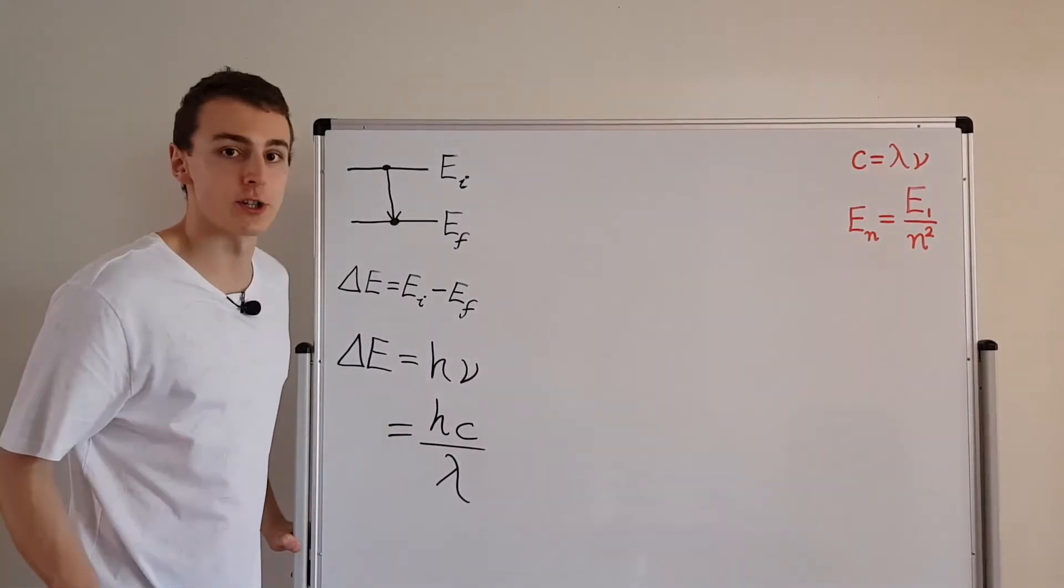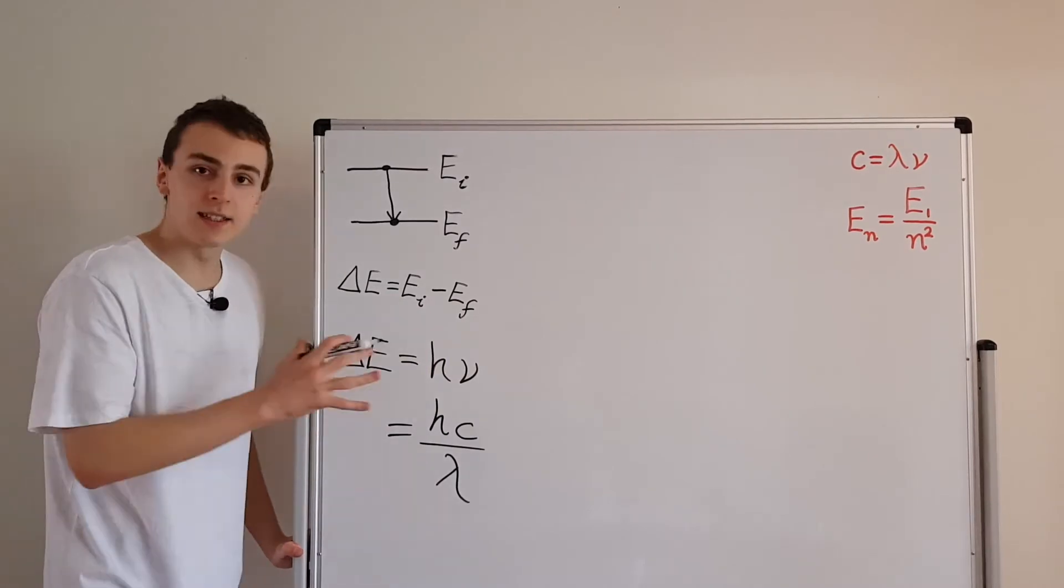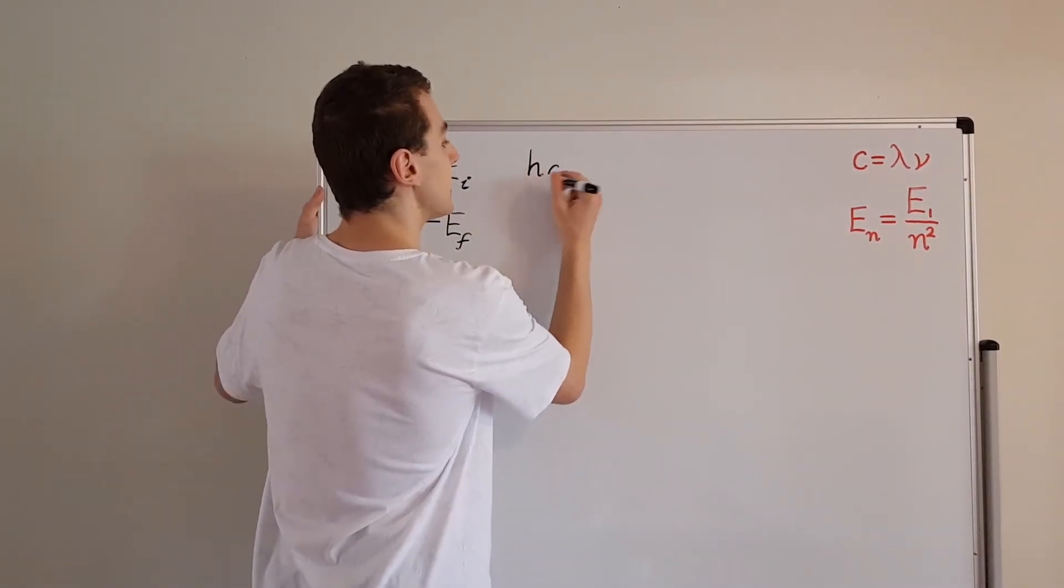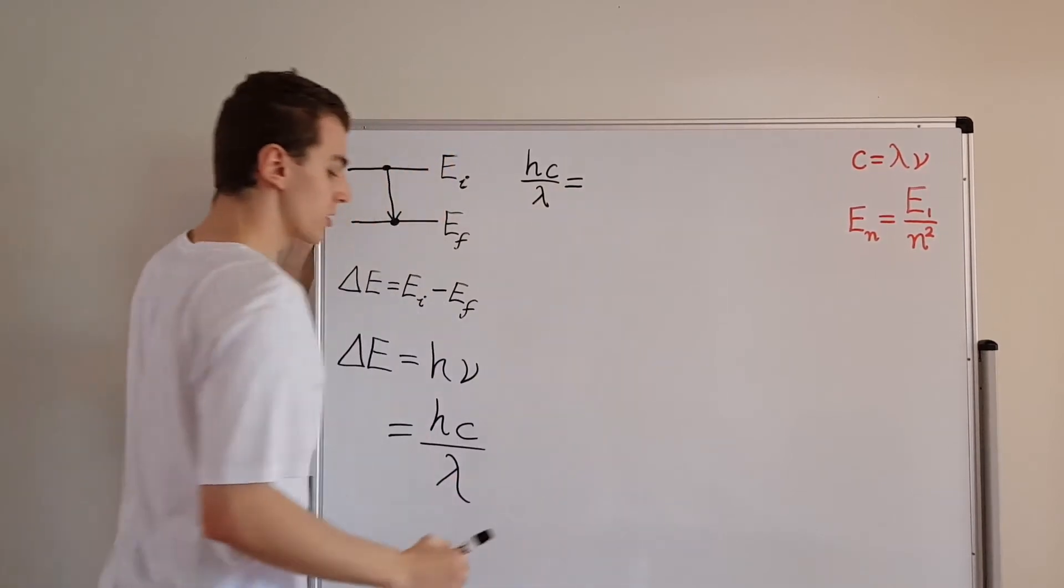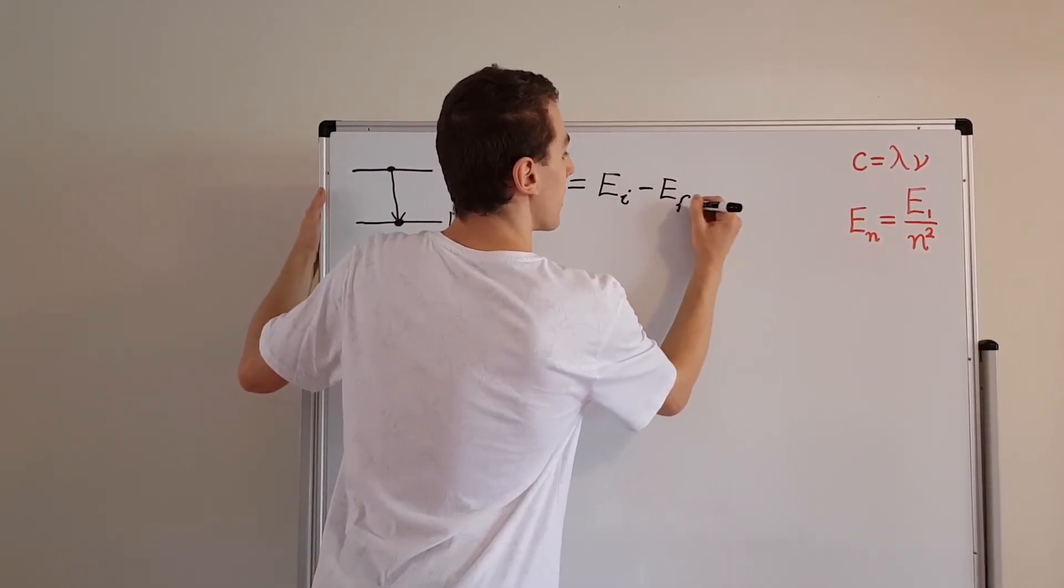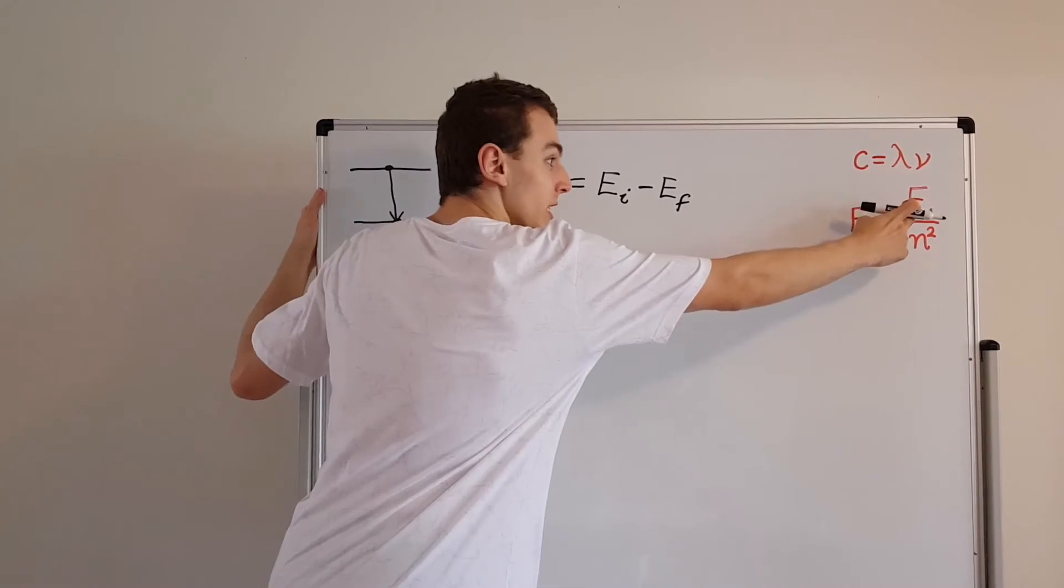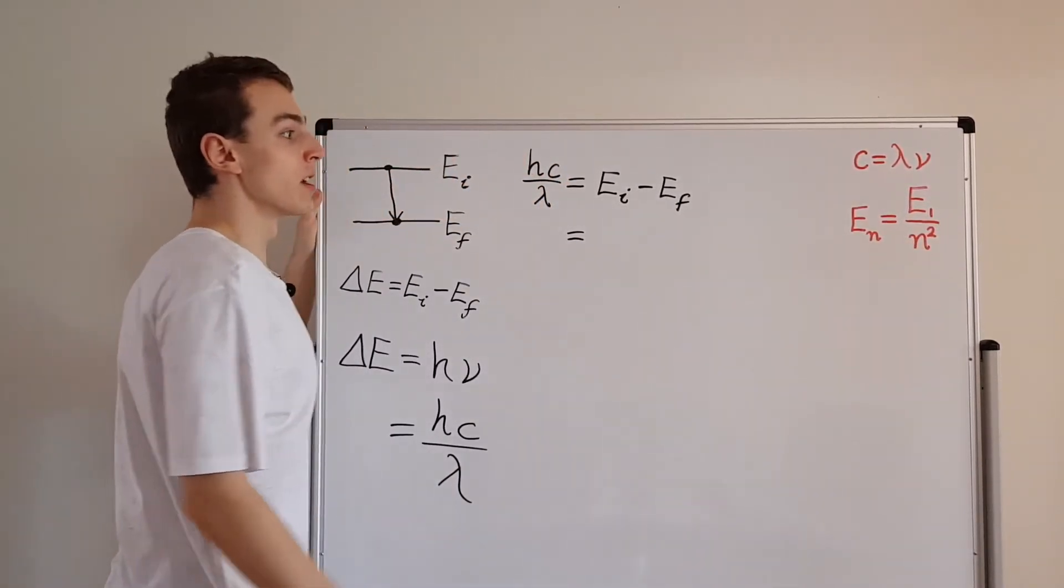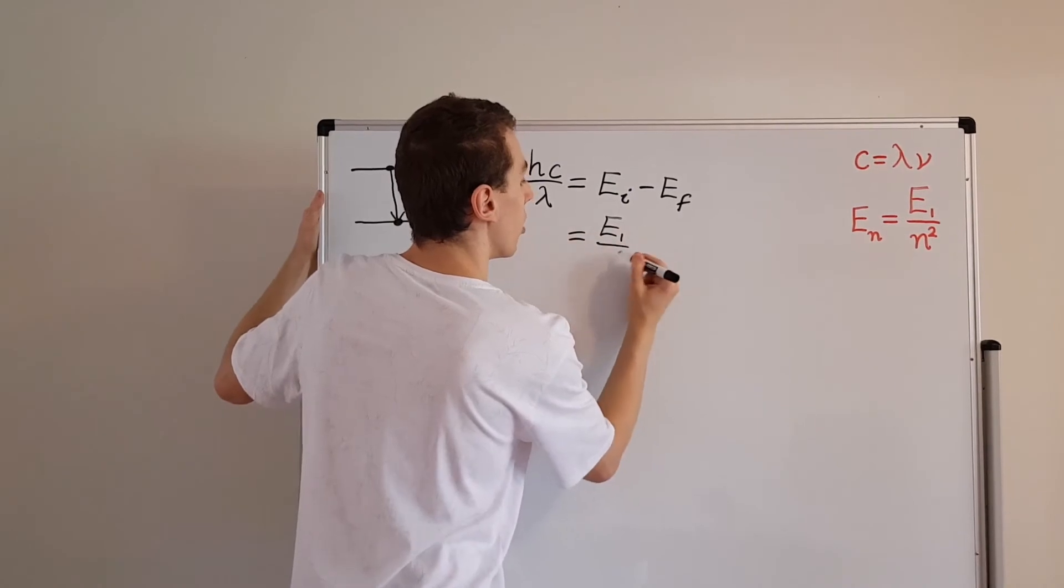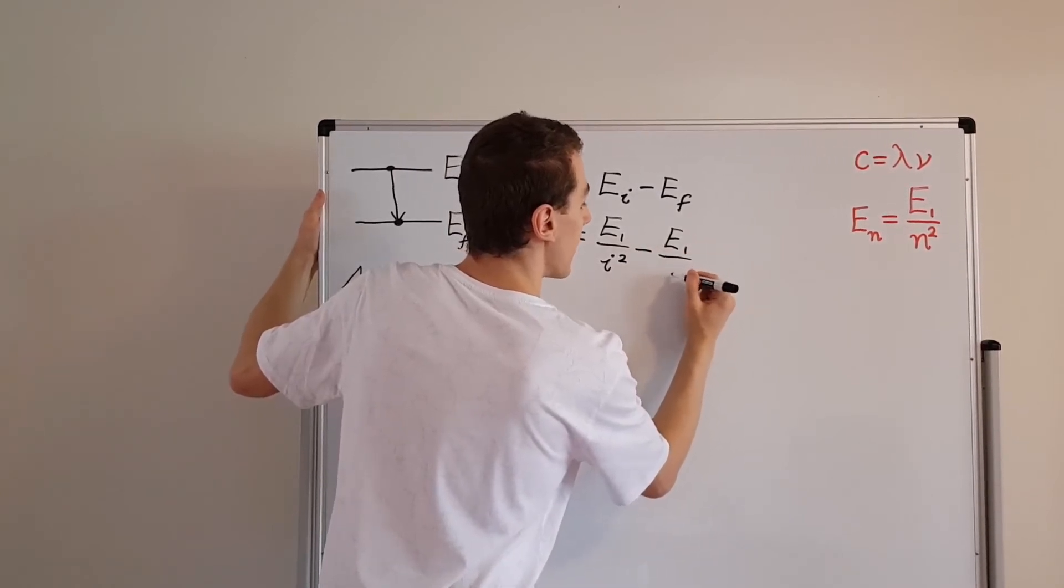Those are two different standard notations. So we have this expression for delta E, and we also have this expression for delta E. So let's equate those two expressions for the change in energy and derive the Rydberg formula. So what we have is hc on lambda is equal to this guy minus this guy, the initial energy minus the final energy. But have a look at this. We have, from the previous video, that the nth energy level is just the first energy level, E1, divided by n squared. So if we just replace this index with an i and an f, we can rewrite the right-hand side as E1 over i squared minus E1 over f squared.